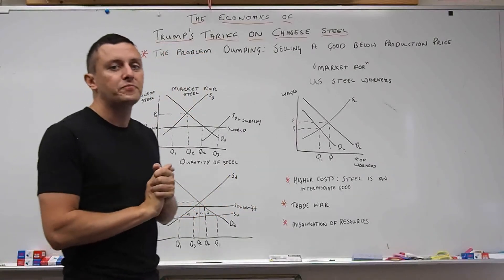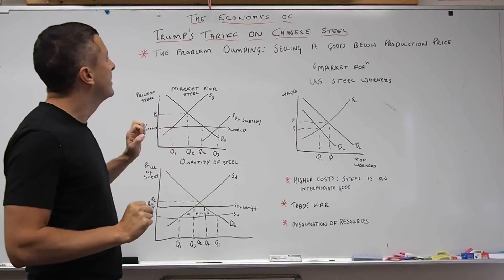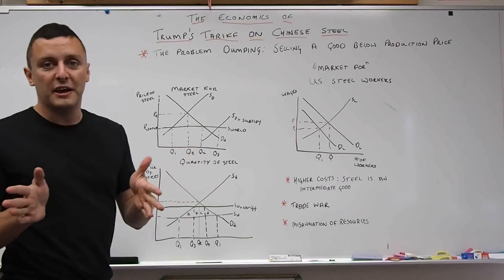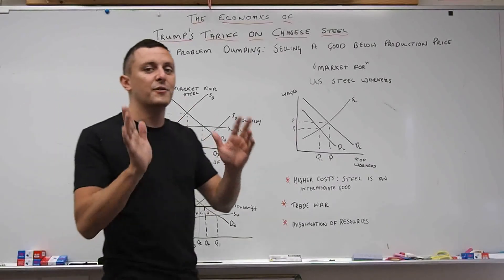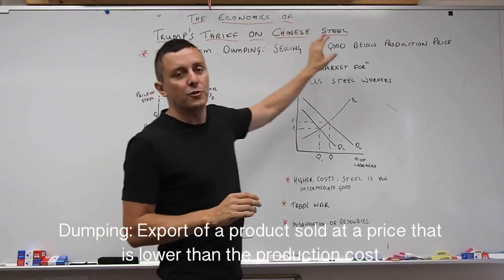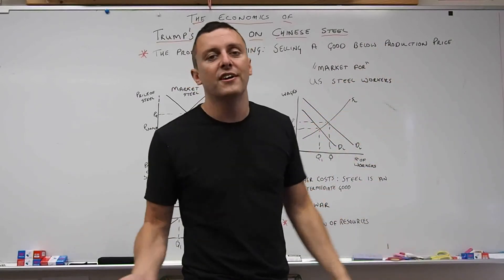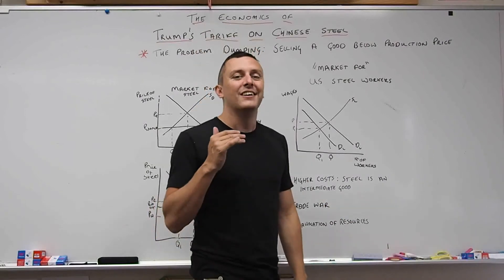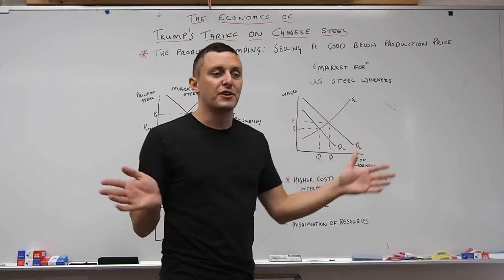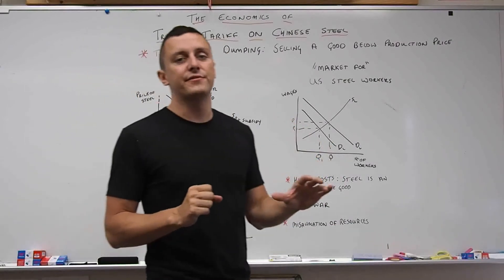The key economic problem is that the US is arguing that China is dumping steel on the American market. In the IA for IB, you've got to define what dumping is in the first paragraph. Dumping is selling a good below production price. You might ask how can a company sell their goods below the cost to produce it? The way they do that, especially in China — traditionally a communist country with lots of state-owned industries — is through massive subsidies.